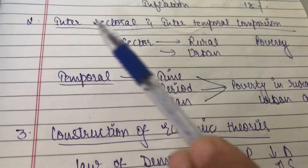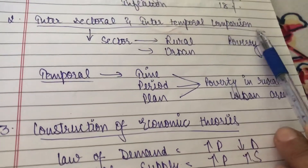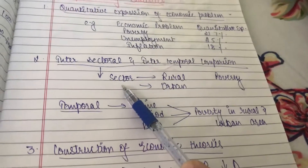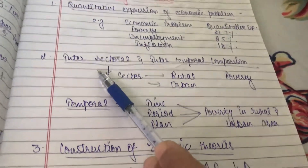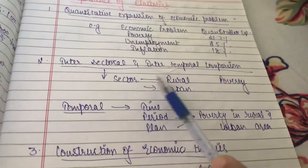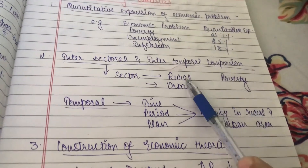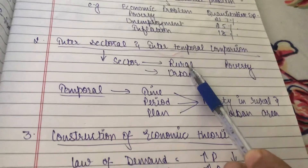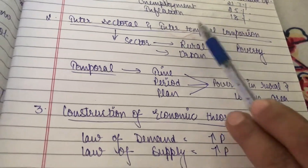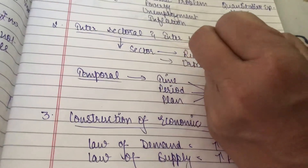The second importance is intersectoral and intertemporal comparison. Intersectoral means sector-wise comparison. By statistics we can compare sector-wise — for example, in rural areas or urban areas, how much poverty is there, whether poverty is more in rural areas or in urban areas.